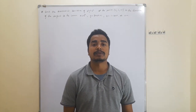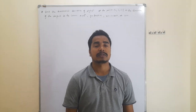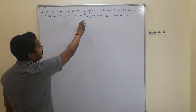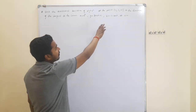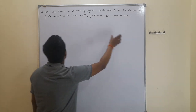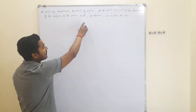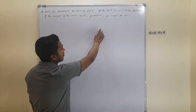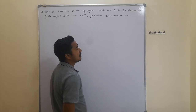Hello everyone. Today we are going to solve a problem of vector calculus. The question is: find the directional derivative of x² y² z² at the point (1, 1, -1) in the direction of the tangent to the curve x = e^t, y = sin(2t) + 1, z = 1 - cos(t) at t = 0.